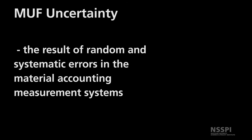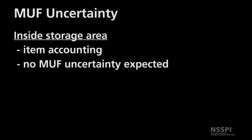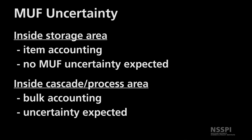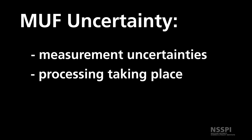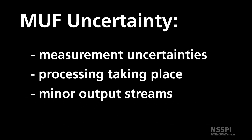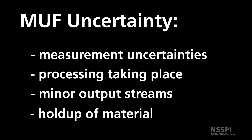The total MUF uncertainty is a result of random and systematic errors in the material accountancy measurement systems. In the storage area, item accounting is performed with a physical count and should confirm the presence of all UF6 cylinders, and thus no MUF uncertainty is expected. In the process areas where bulk accountancy is used, a non-zero value for MUF uncertainty is expected. This uncertainty is due to the fact that all measurements carry their own degree of uncertainty, it is difficult to accurately measure material in the cascade area while processing is taking place, some minor output streams may not be able to be measured precisely, and there may be holdup of nuclear material in pipes, containers, and so forth.